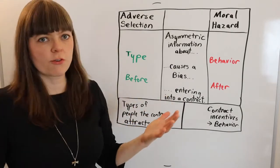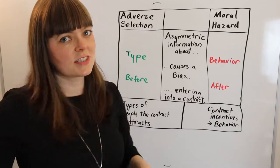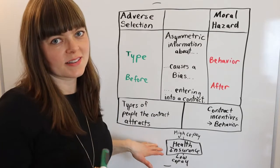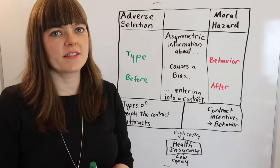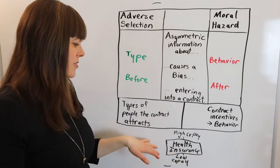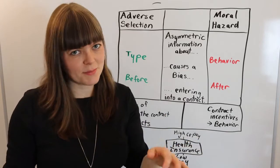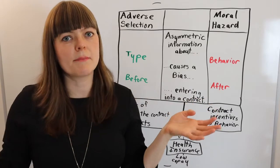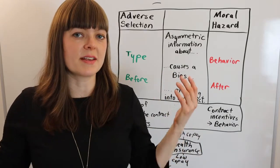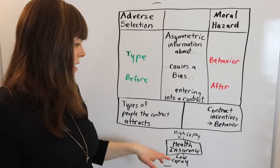Let's go through a few examples, starting with health insurance. There are a lot of things associated with a health insurance contract — the network of doctors, which procedures are covered — but one of the most basic things is what is the copay: how much do you have to pay when you go to the doctor? A classic copay might be twenty or thirty percent, but you could have higher quality insurance where the patient pays zero percent. Let's imagine a low copay, like zero percent, versus a high copay contract.